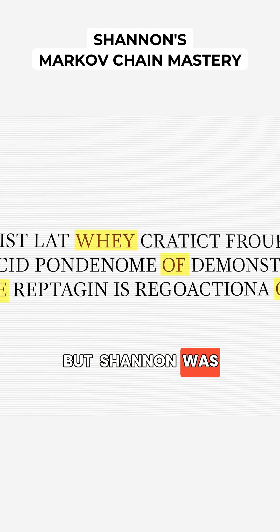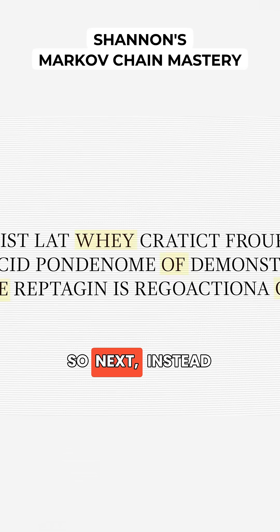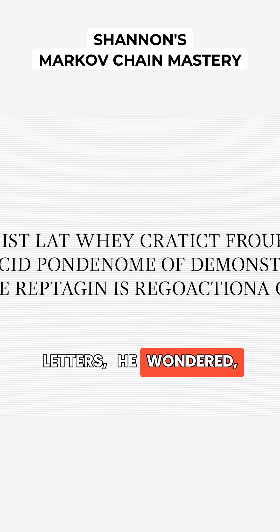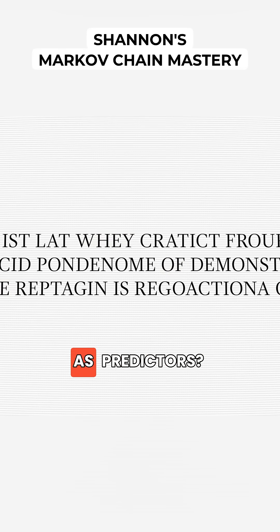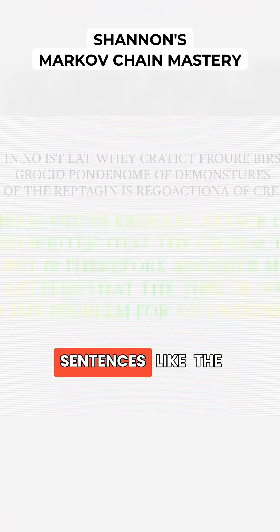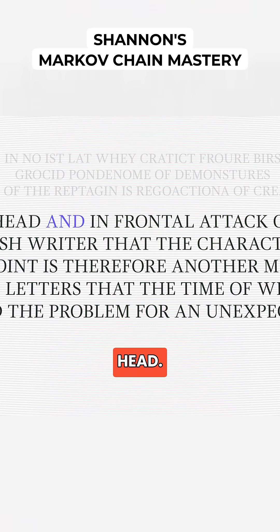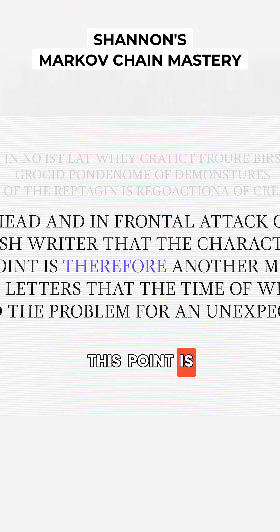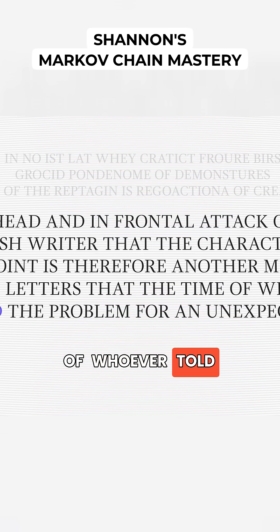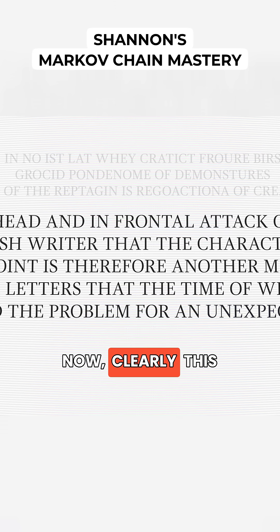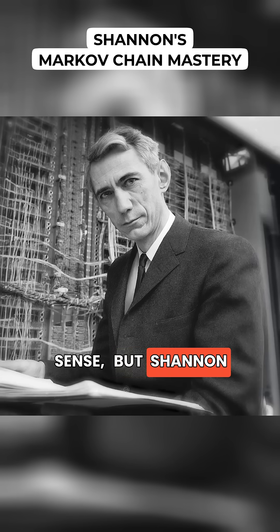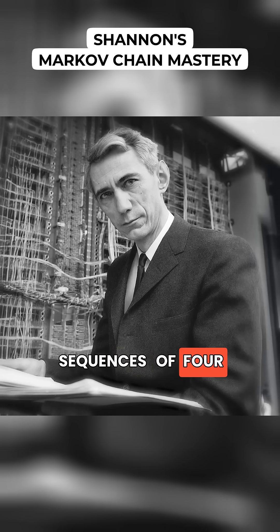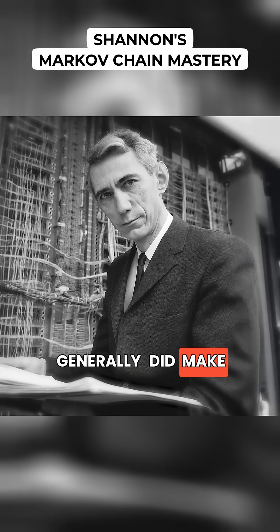But Shannon was convinced he could do better. So next, instead of looking at letters, he wondered, what if I use entire words as predictors? That gave him sentences like this: 'The head and in front to attack on an English writer that the character of this point is therefore another method for the letters that the time of whoever told the problem for an unexpected.' Now, clearly, this doesn't make any sense. But Shannon did notice that sequences of four words or so generally did make sense.